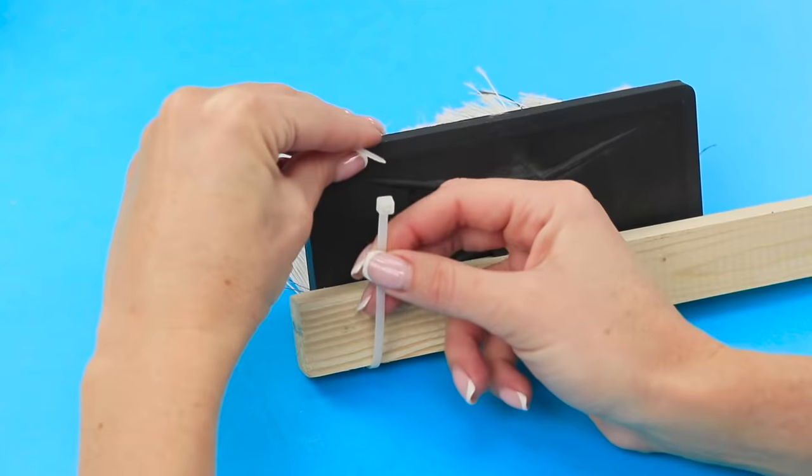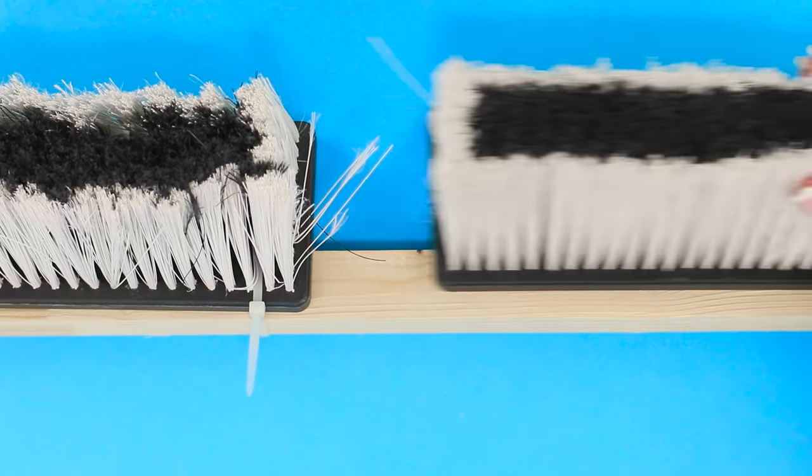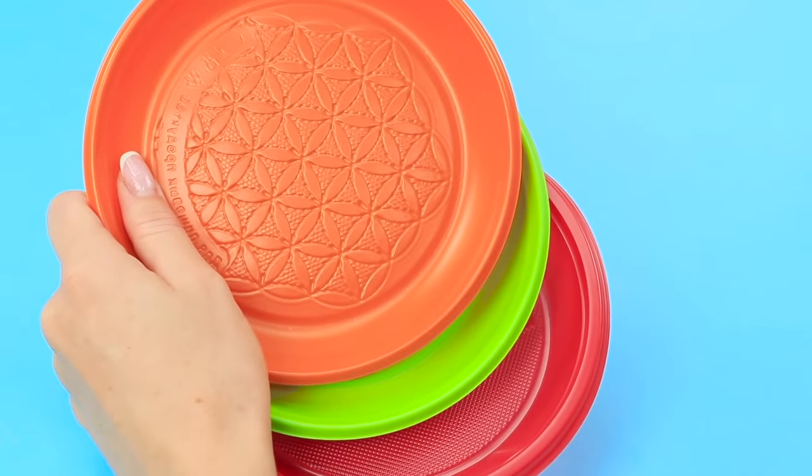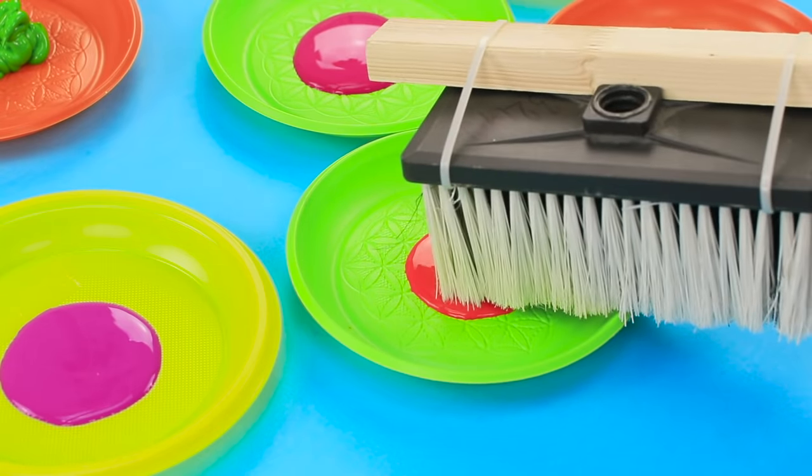And now, take a wooden bar and a couple of brushes. Connect the brushes using plastic ties. Use disposable plates as paint containers. Pour in the paint. Apply each of the colors to the brushes.